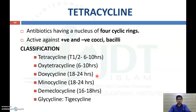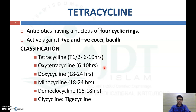Tetracycline is classified into: tetracycline, oxytetracycline, doxycycline, minocycline, demeclocycline, and tigecycline. Their half-lives are: tetracycline 6–10 hours, oxytetracycline 6–10 hours, doxycycline 18–24 hours, minocycline 18–24 hours, and demeclocycline 16–18 hours. As the half-life increases, we can reduce the dosing interval — for example, doxycycline needs only one dose per day.